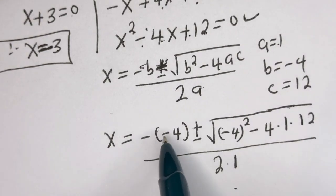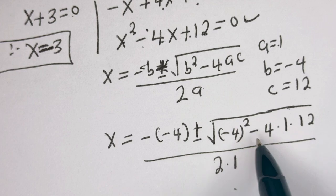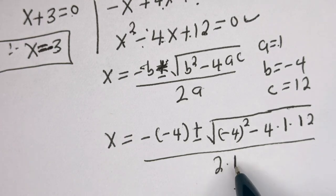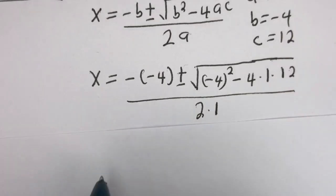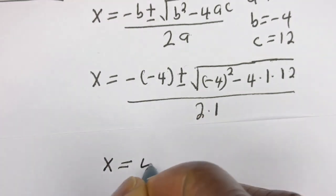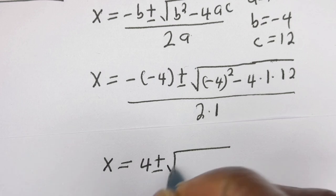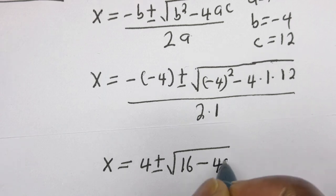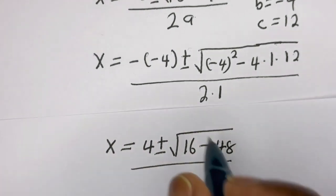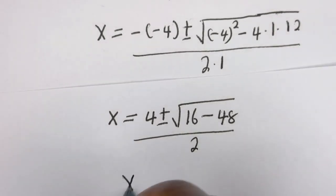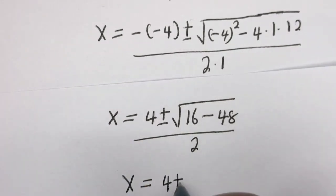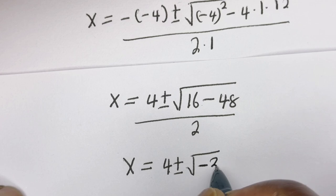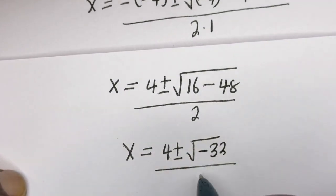s is equal to minus B plus or minus square root of B squared minus 4AC, divided by 2A. Substituting: s is equal to minus minus 4, plus or minus square root of minus 4 squared minus 4 times 1 times 12, divided by 2 times 1. This gives s equals 4 plus or minus square root of 16 minus 48, that is minus 32, divided by 2.